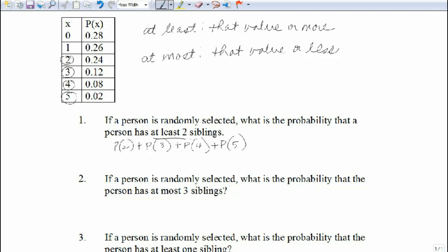So if we add these together, 0.24 plus 0.12, and I'm getting everything out of the chart here, plus 0.08 plus 0.02. So if we add them together, we're going to be using our calculator, we get 0.46 or 46%. So there's a 46% probability that if we ask a person randomly selected, they have at least two, we will have a 46% chance of doing that.